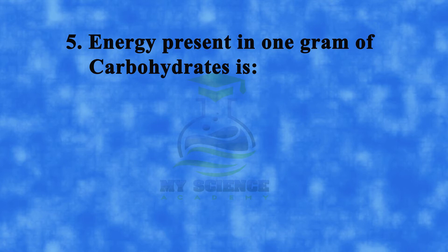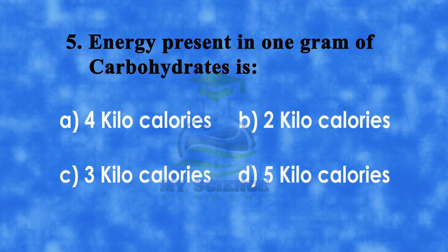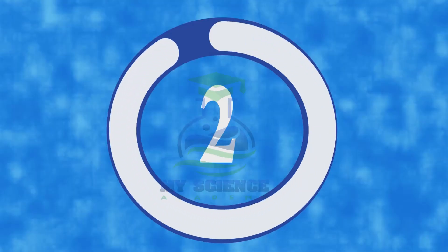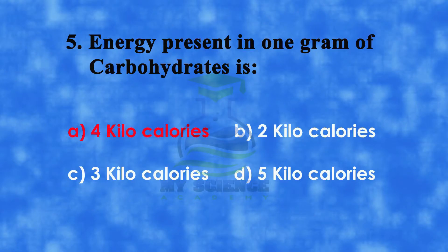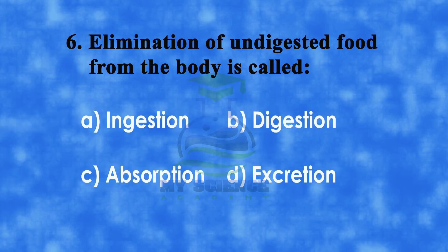The correct answer is d) magnesium. Question number five: the energy present in one gram of carbohydrates is — a) four kilocalories, b) two kilocalories, c) three kilocalories, or d) five kilocalories. The correct answer is a) four kilocalories.